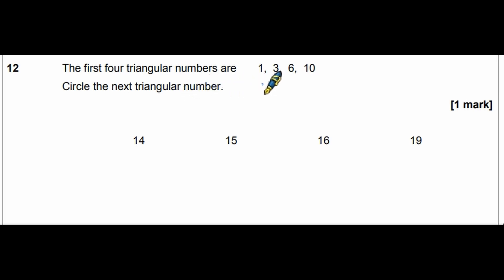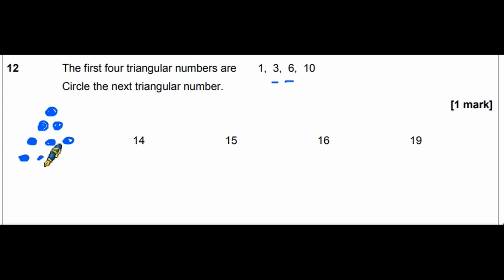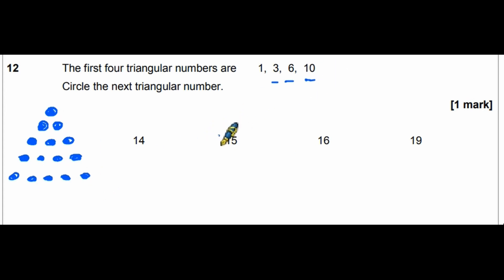Question 12: the first four triangular numbers are 1, 3, 6, and 10. Each time we add one more row: add 1 to get 1, add 2 to get 3, add 3 to get 6, add 4 to get 10. So the next triangular number requires adding 5, giving 10 + 5 = 15.